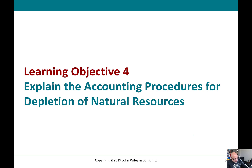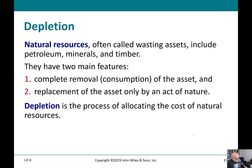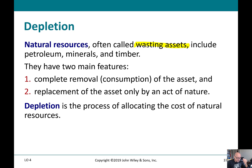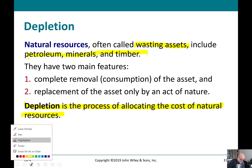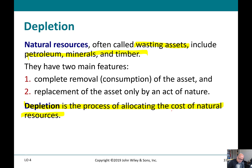Now let's move forward and talk about depletion of natural resources. These are called wasting assets — they're going to deplete and go away over time. We buy a piece of land not for what we can build on the surface, but for what's in the ground — coal, petroleum, minerals, gravel, timber. That's called depletion. Notice that cost — the cost of extracting those resources — is a term that talks about it not necessarily being an expense. Cost can go into inventory.